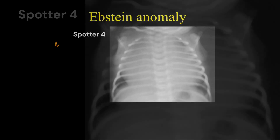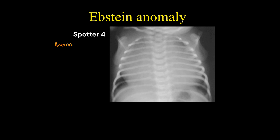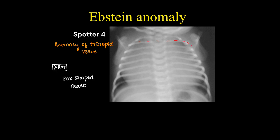This is a pediatric cardiac disease — Ebstein anomaly — in which there is an anomalous tricuspid valve. Usually the x-ray findings are variable and can be normal. But the classic sign described is the box-shaped heart, which can be seen in this x-ray, typical for Ebstein anomaly.